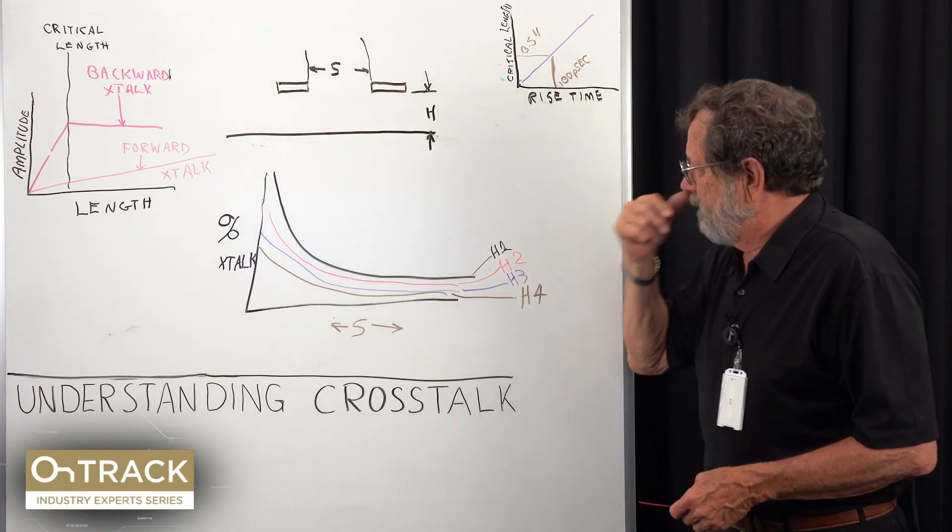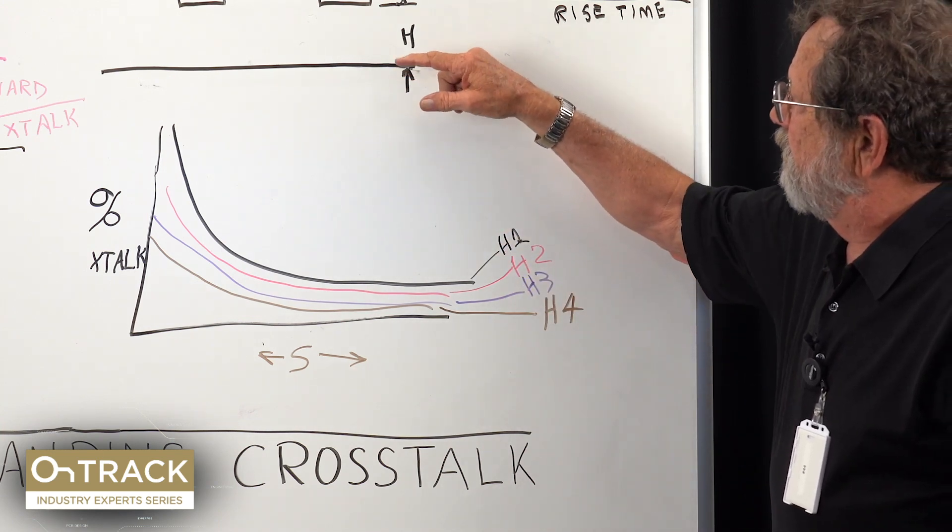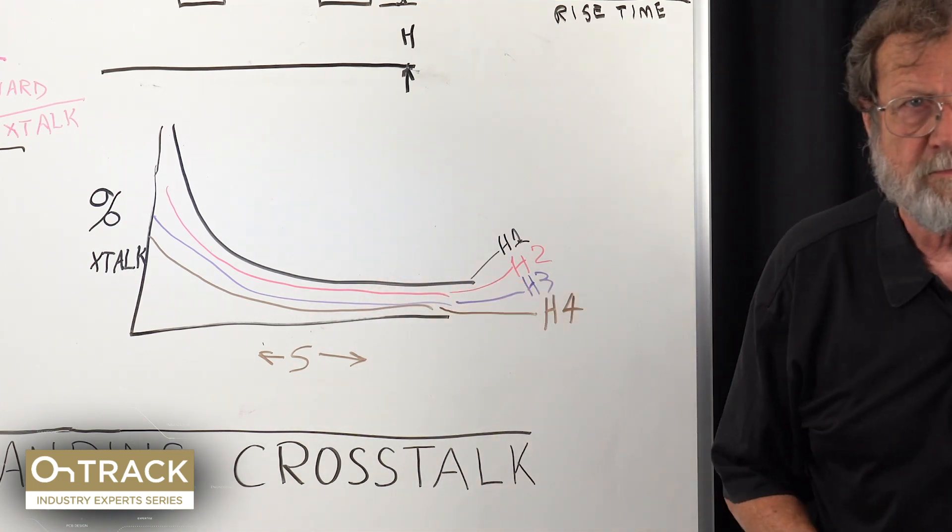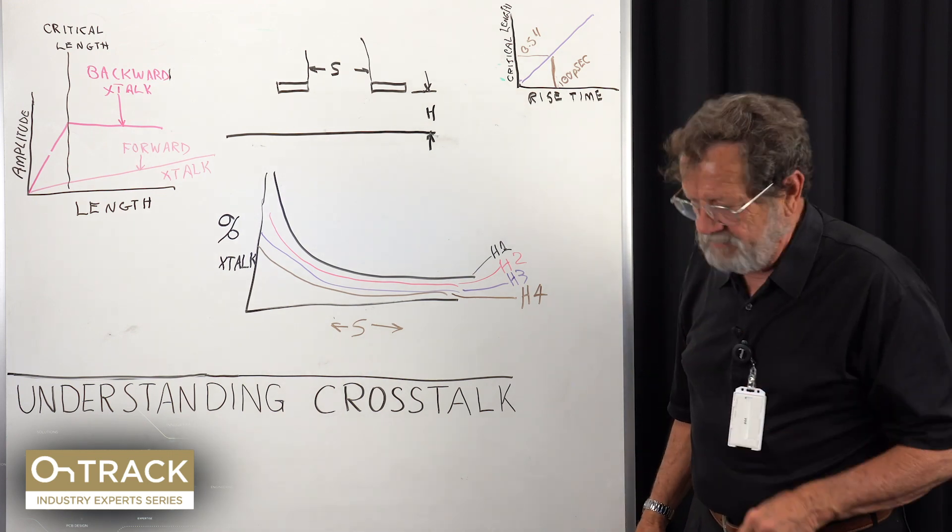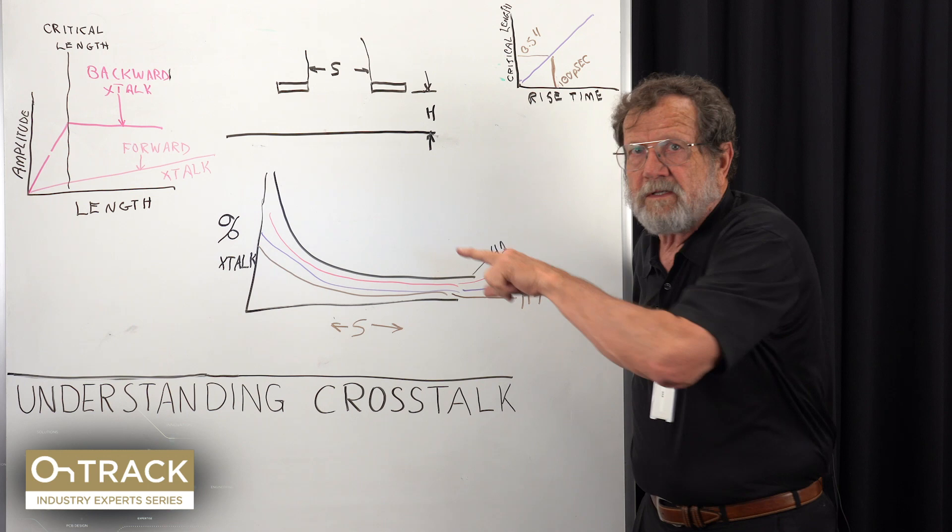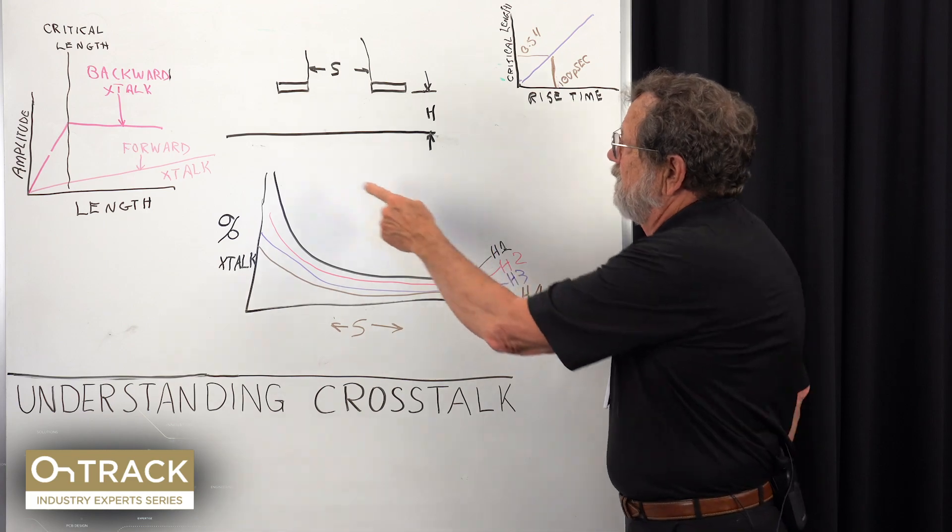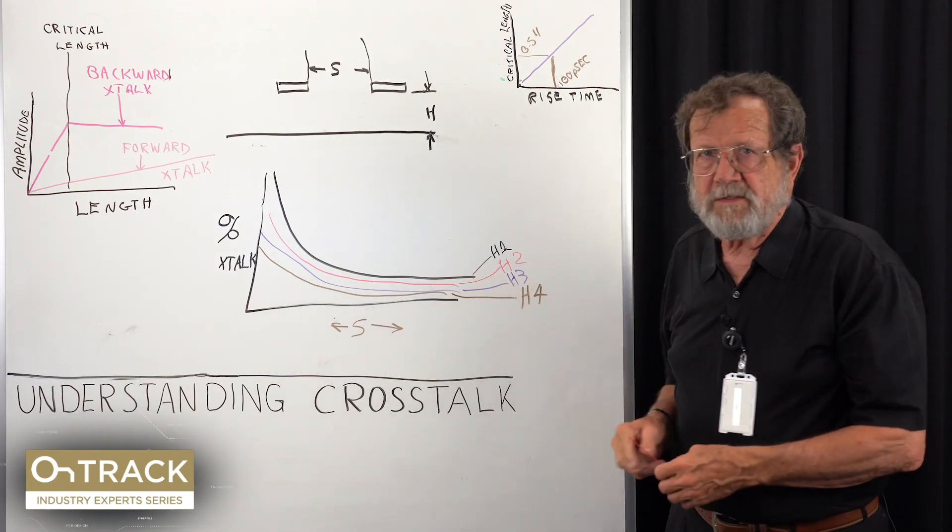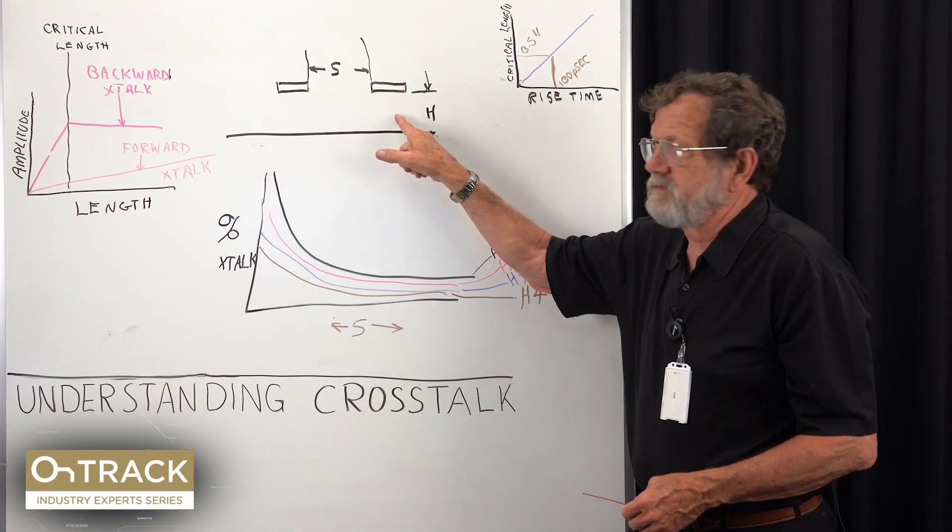What I've drawn here shows how that looks, where the black line is fairly far away from the plane, the red one's a little closer, the purple one's closer, and the brown's closer yet. We can precisely control crosstalk by understanding geometry. I'll go into my tool that analyzes these things, propose a geometry like that, and calculate what the crosstalk will be. If it's not a good number, I'll either increase S or reduce H, or maybe both.